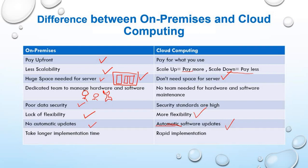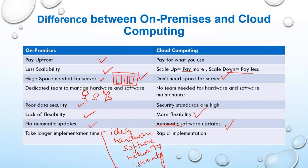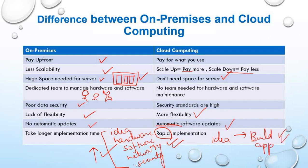In on-premises, implementation takes longer because after getting the idea you have to think about hardware, software, networking, and security — so obviously the time taken is more. But when it comes to cloud computing, implementation is rapid — you get the idea, start building your app, and it is out in the market quickly. Your customers are happy because it's released so quickly and you gain the competitive advantage. These are the differences between on-premises and cloud computing.